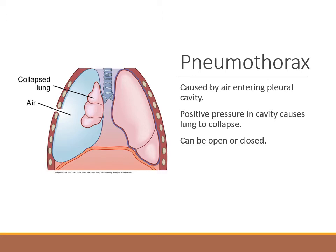This condition should be suspected after any trauma to the chest wall. It can be classified as open or closed. In an open pneumothorax, air enters through an opening in the chest wall and the parietal or outer lining of the pleura. A closed pneumothorax occurs when the visceral lining, which is the inner lining of the pleura, is disrupted, allowing air to enter into the pleural space from the lung. In this case, there is no external wound.